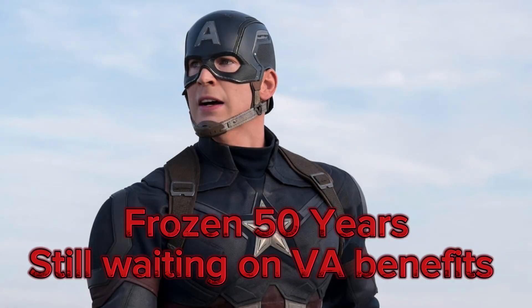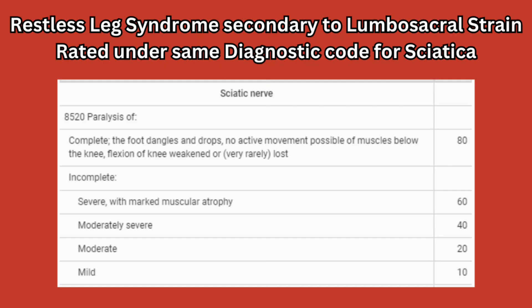The list goes on — the possibilities are endless. But you've got to be consistent with your doctor. You need to be able to talk about your symptoms, whether it's mental health, sciatica, or restless leg syndrome. The VA uses the same diagnostic code for rating sciatica as they do for rating restless leg syndrome secondary to lumbar sacral strain.